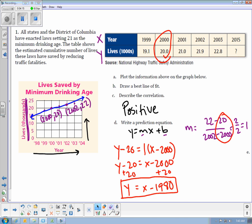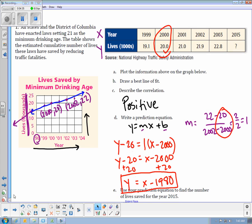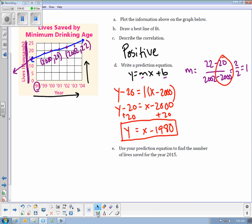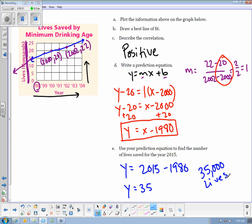And if you think about it, this line is going to keep going down backwards this way. And notice that we're at 1998 here. So if I went all the way down, it kind of makes sense that I'd be at negative 1,980, since I'm at about positive 15 right there. So then I want to use that prediction equation that I created to find the number of lives saved in 2015. So now that I have a prediction equation, I can take 2015 and plug it in. So I'm going to have y equals 2015 minus 1980. And when I subtract those two, I end up with about 35. So that means 35,000 lives will be saved by reducing traffic fatalities in 2015.